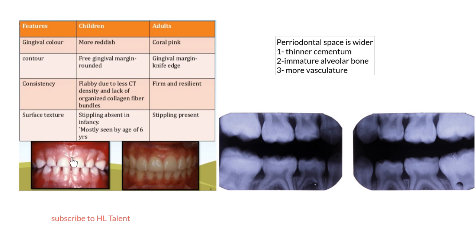The third difference: the gingiva of the child appears to be more flabby — that is to say there is less connective tissue density and a lack of organized collagen fiber bundles. In contrast, the adult has firm and resilient gingiva because of the presence of well-established collagen fibers.